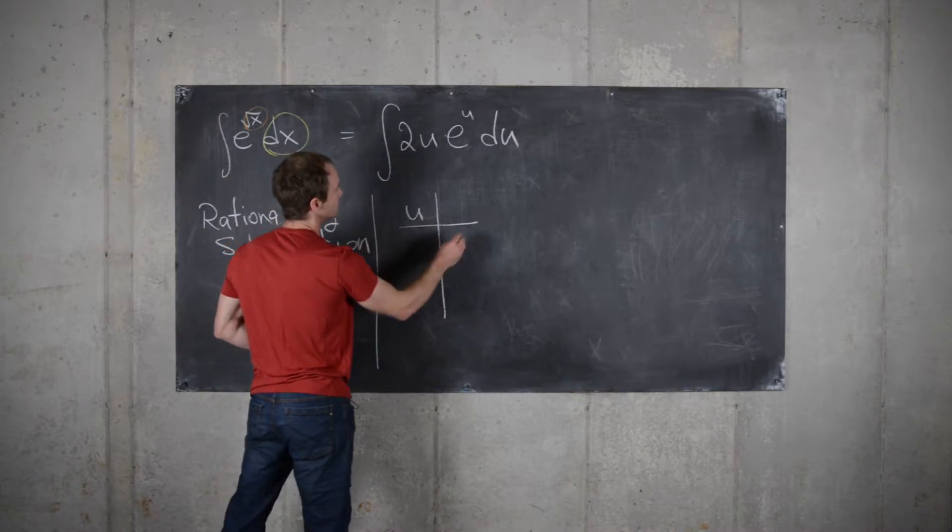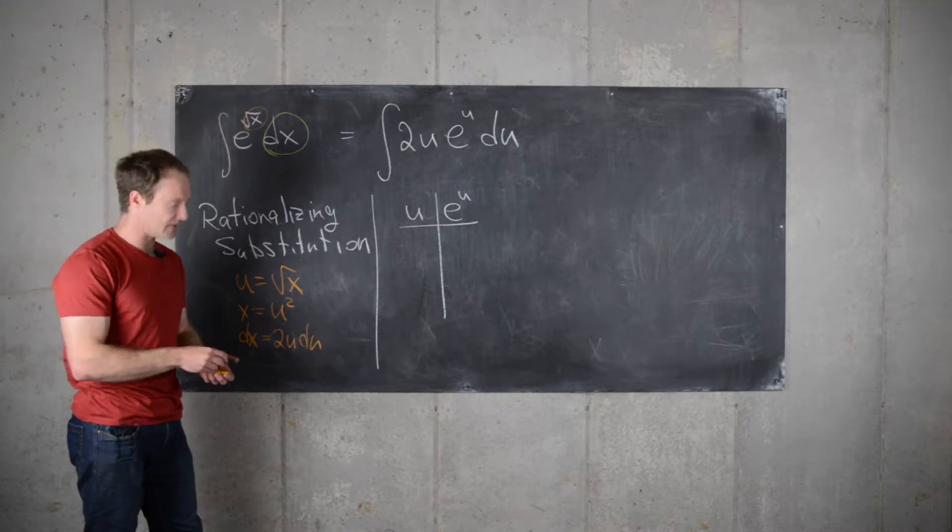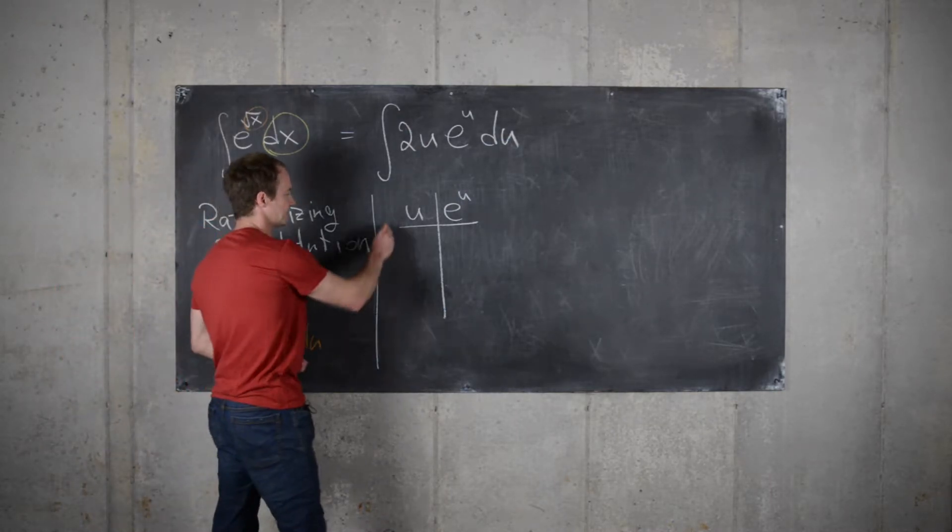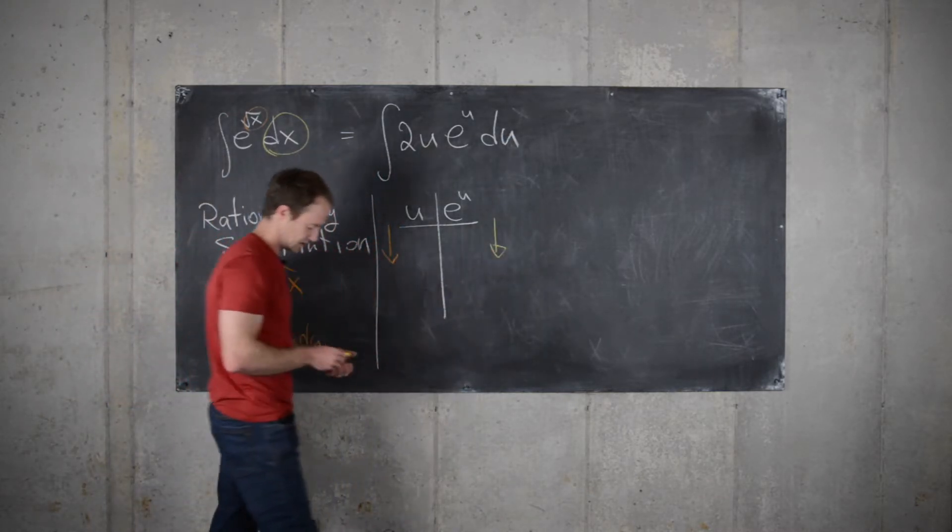So, we'll make a table, u, e to the u. We'll add the factor of 2 at the end, and then we'll take derivatives down this column and antiderivatives down this column.